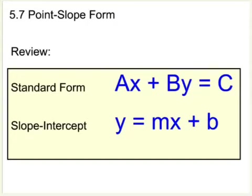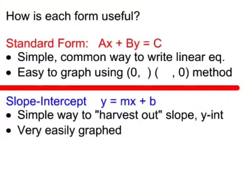We're going to look at a third form now. But before we do that actually let's look at some of why these are useful. Standard form is useful because it's simple and we can all agree to write it that way. And it's also easy to use the cover-up method, zero comma something, something comma zero, to graph this thing because we can cover-up.